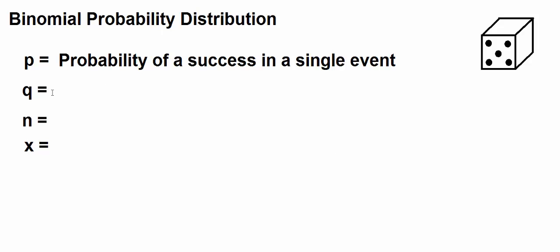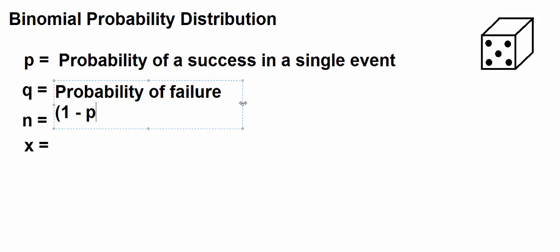Q is going to be the complement of P, so Q is the probability, then, of failure. P is the probability of success, Q is the probability of failure, both for a single event. Since there's only two possible outcomes, by the complement rule, Q always equals 1 minus P.